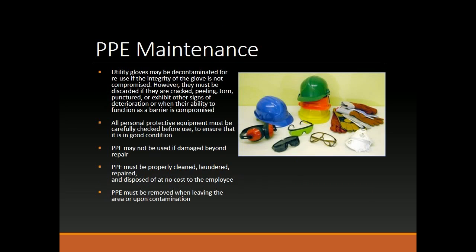PPE Maintenance. Utility gloves may be decontaminated for reuse if the integrity of the glove is not compromised. However, they must be discarded if they are cracked, peeling, torn, punctured, or exhibit other signs of deterioration or when their ability to function as a barrier is compromised. All personal protective equipment must be carefully checked before use to ensure it is in good condition. PPE may not be used if damaged beyond repair. PPE must be properly cleaned, laundered, repaired, and disposed of at no cost to the employee. PPE must be removed when leaving the area or upon contamination.